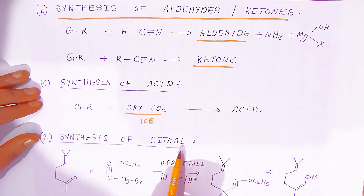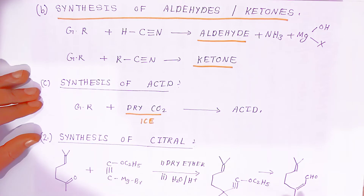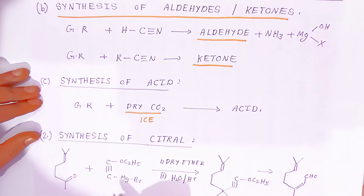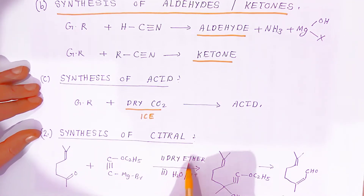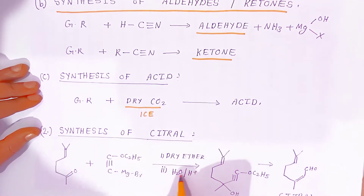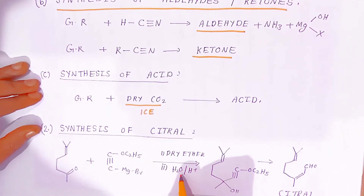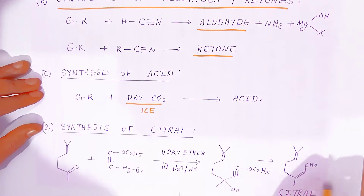For synthesis of citral: two reactants are combined in presence of dry ether, followed by acidic hydrolysis, and citral is obtained as the product.